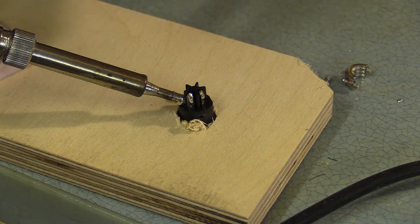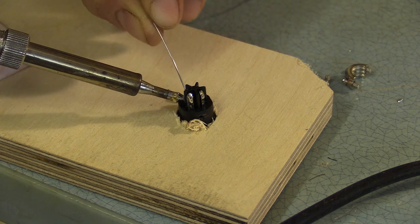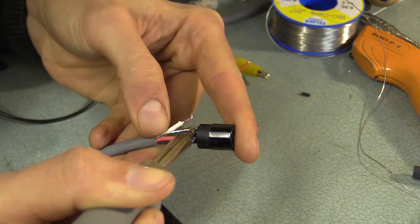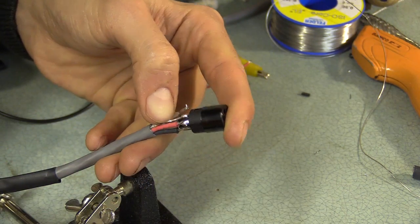I made a jig to hold the sockets while soldering by drilling a hole roughly the same size into a piece of ply. Once I tin the contacts I soldered these together.